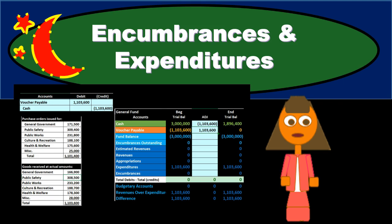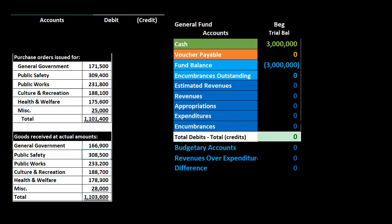In this presentation we will take a look at an example problem recording encumbrances and expenditures. The information is going to be on the left side; we're going to record that information with a journal entry and then post it to our worksheet. That worksheet has a beginning trial balance, then the adjustments, then the ending trial balance, which will help ground us in the activities that we are doing.